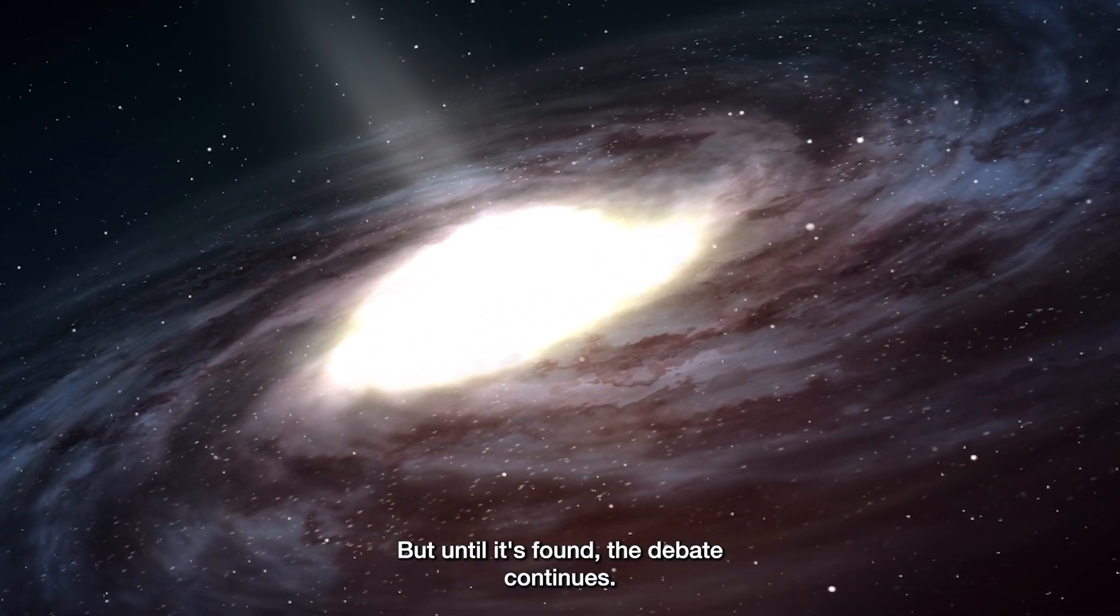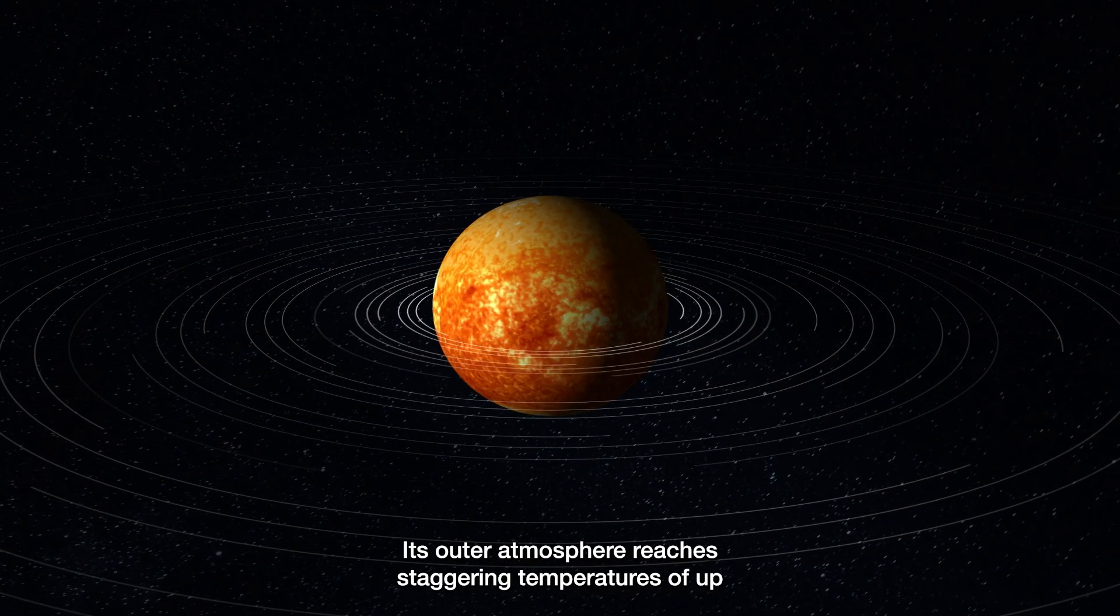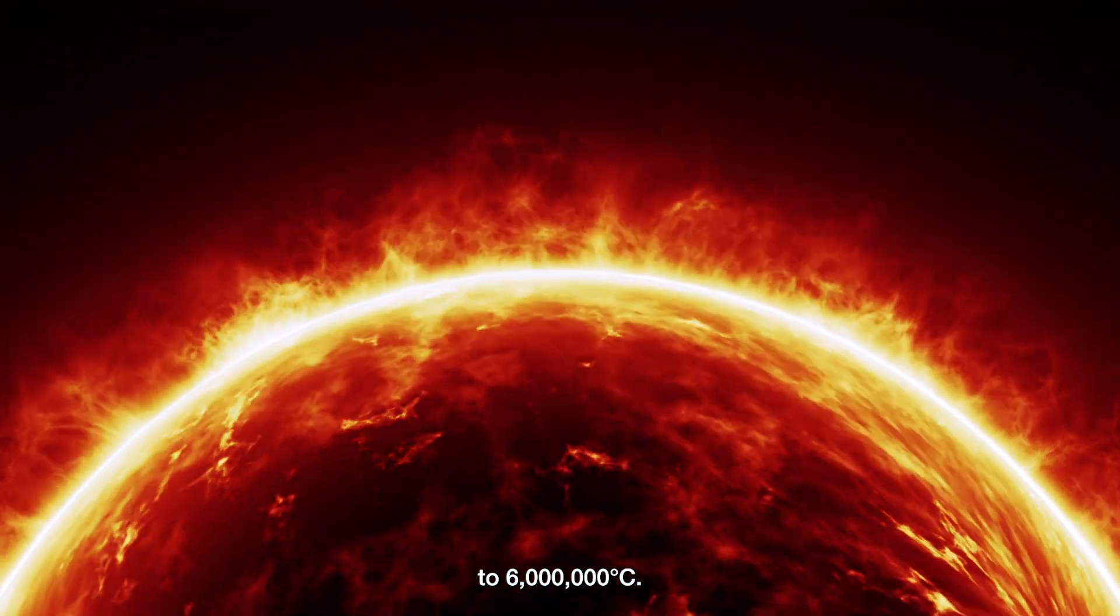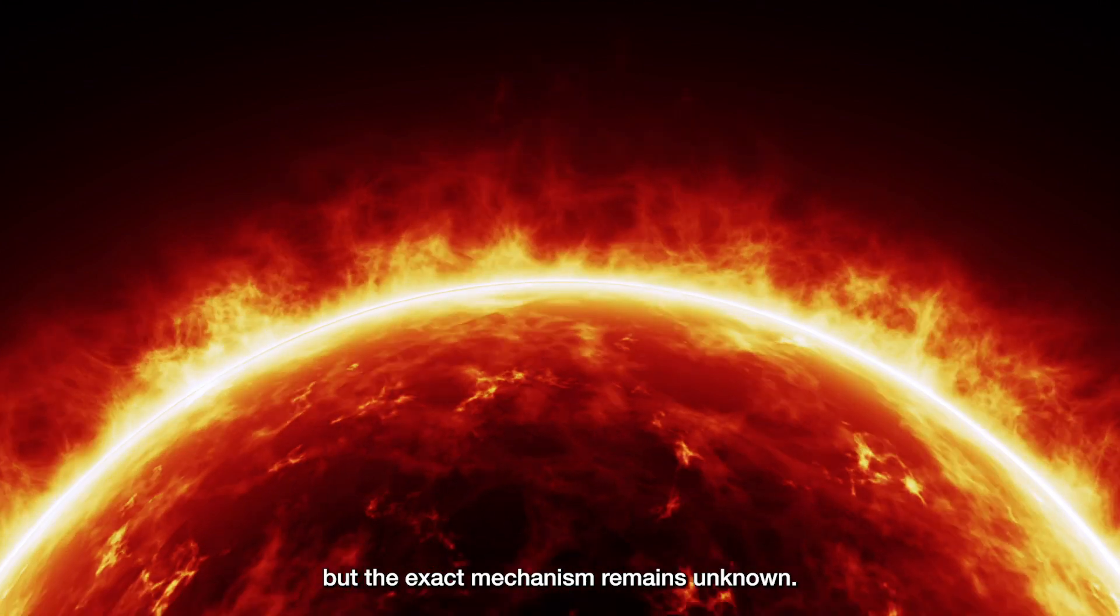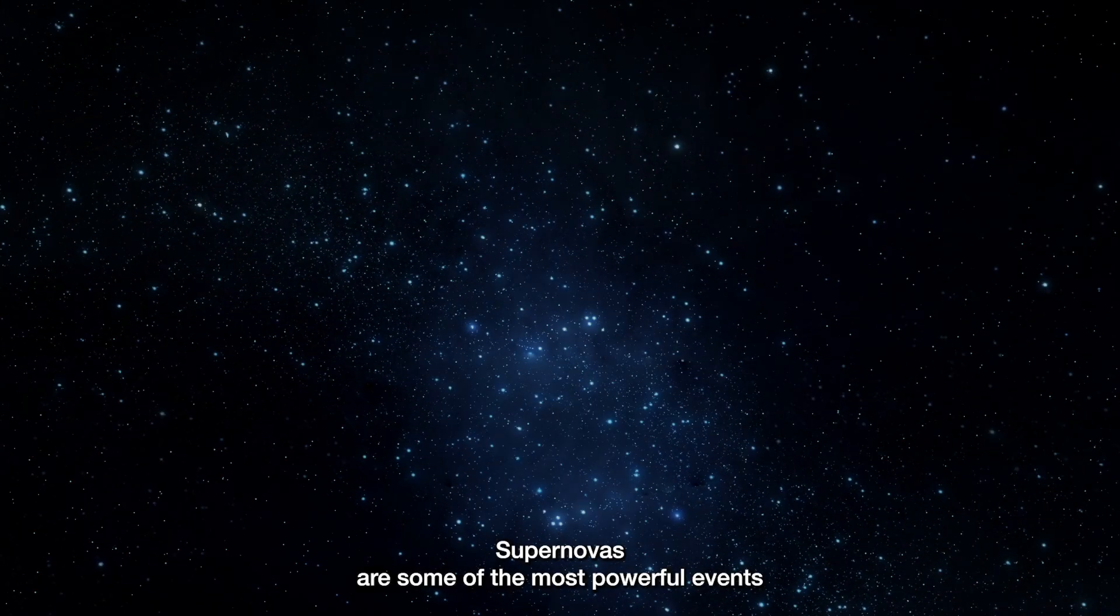The sun's corona, its outer atmosphere, reaches staggering temperatures of up to 6 million degrees Celsius. Scientists believe this is related to the sun's magnetic fields, but the exact mechanism remains unknown.